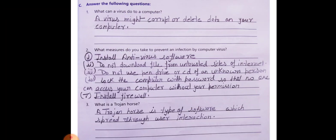Now question number 2, what measures do you take to prevent an infection by computer virus? First of all we will install antivirus, we do not download files from untrusted sites, we do not use pen drives or CDs of other persons, always lock your computer with a strong password so no one can access your computer, install firewalls etc. So these are the measures which we take to prevent our computer.